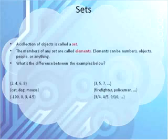What's the difference between the examples below? The first side on the left, two, four, six, eight, cat, dog, mouse, negative one hundred, zero, three, four point five. They're all sets that have a certain number of elements. So this one has four elements. Cat, dog, mouse is three. And this last one has four elements as well.